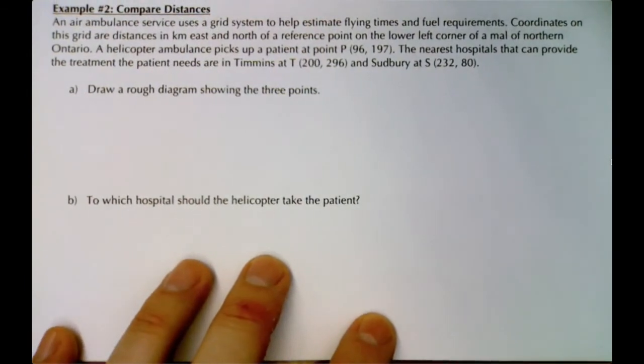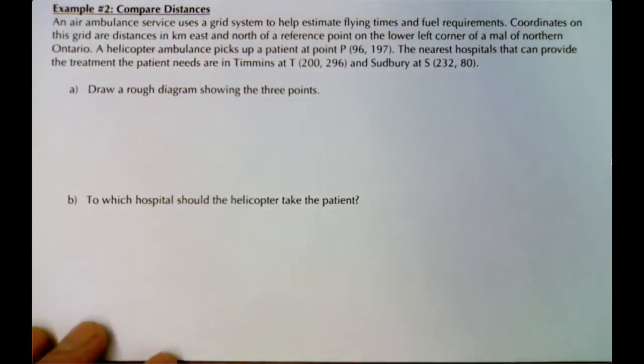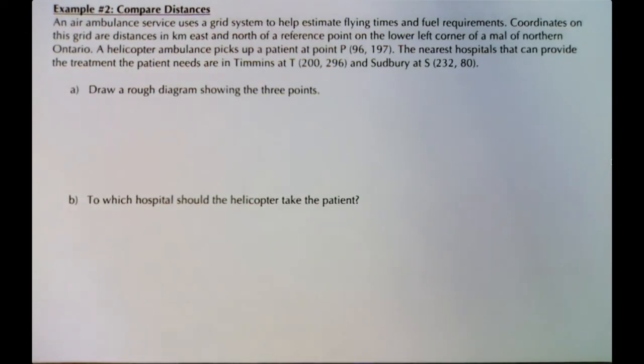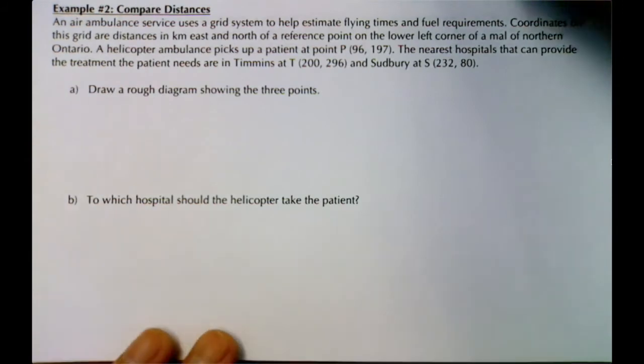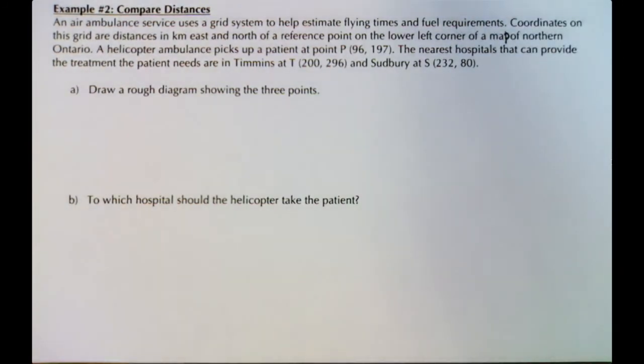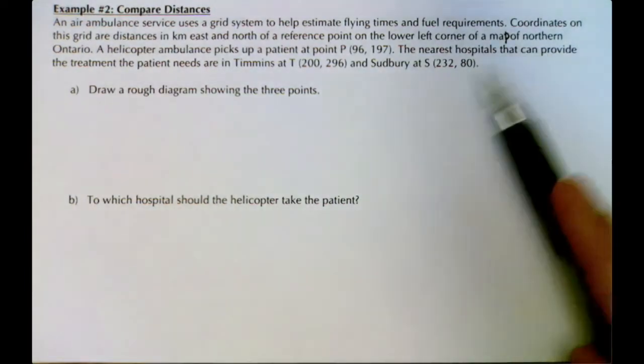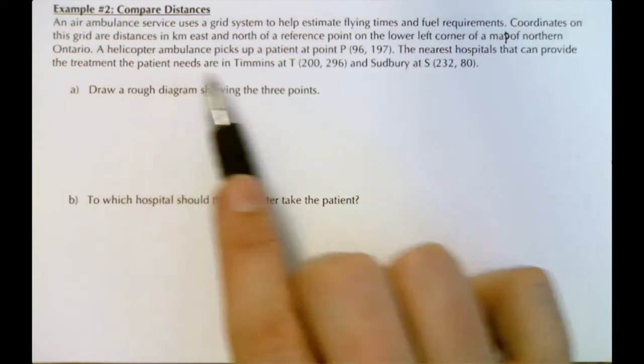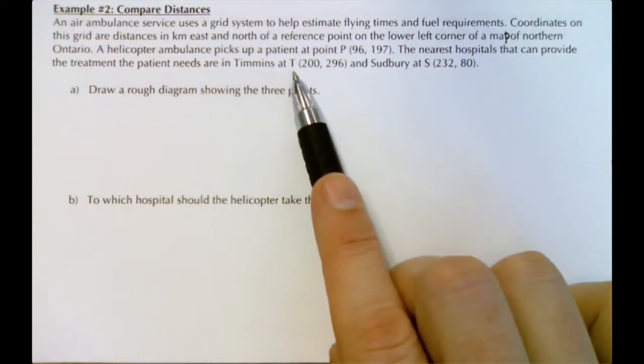Let's try one more example: compare distances. An air ambulance service uses a grid system to help estimate flying times and fuel requirements. Coordinates on this grid are distances in kilometers east and north of a reference point. A helicopter ambulance picks up a patient at point P.